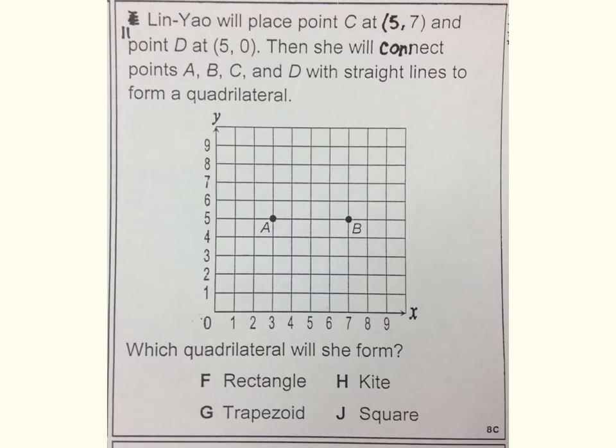Number eleven. Lin Yao will place point C at 5,7 and point D at 5,0. Then she will connect points A, B, C, and D with straight lines to form a quadrilateral. Which quadrilateral will she form? F. Rectangle. G. Trapezoid. H. Kite. J. Square.